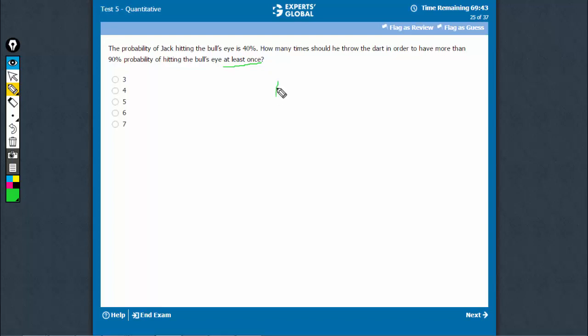The probability of hitting is 40%, so the probability of not hitting would be 60%. Probability of not hitting twice would be 0.6 × 0.6 = 0.36. This is the probability of not hitting twice in two times.